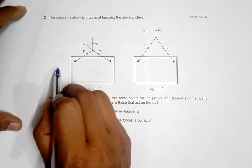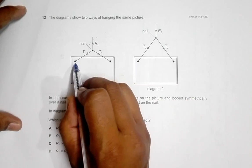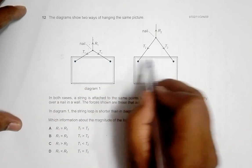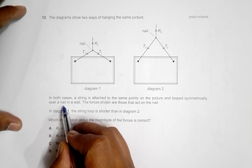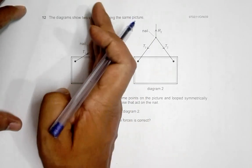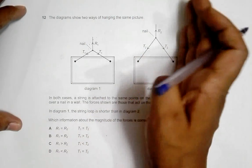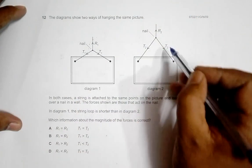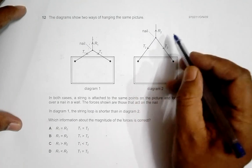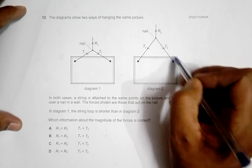This point is the same as this point, and this one is the same as this point, looped symmetrically over a nail in a wall. This side and this side are equal, and this side and this side are also equal. The forces shown are those that act on the nail, along the string, and these are the reaction forces on the nail.